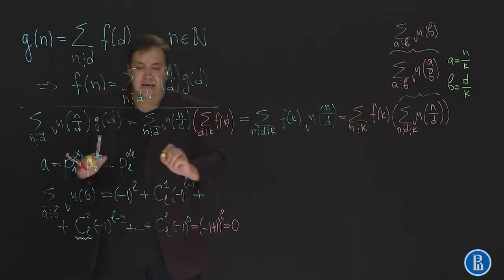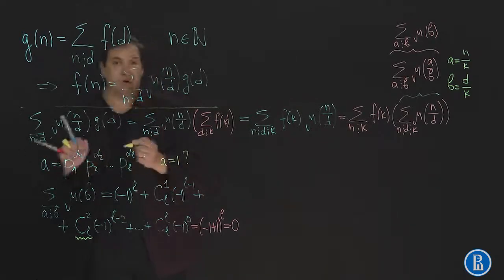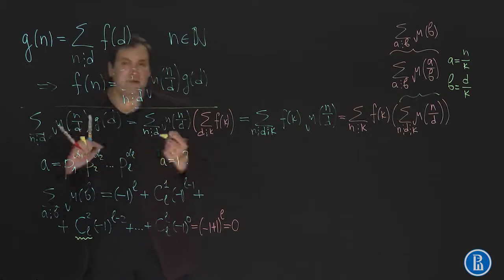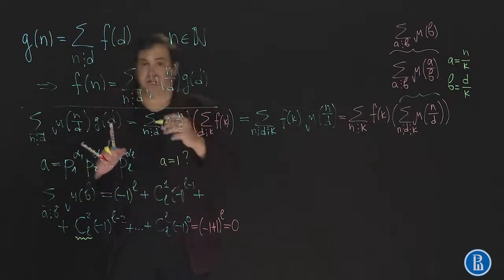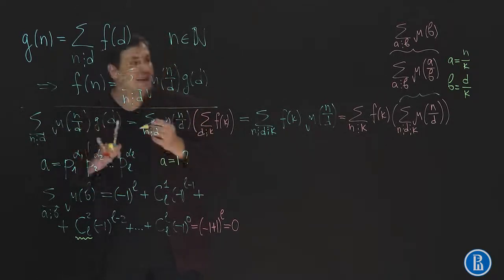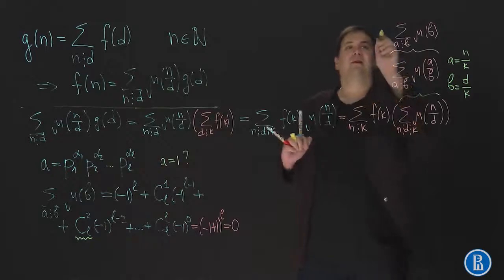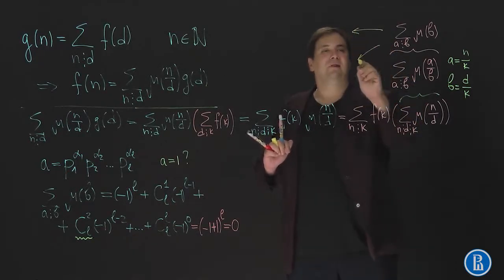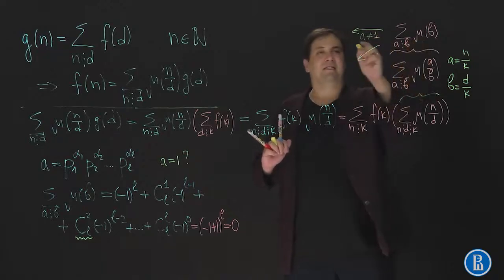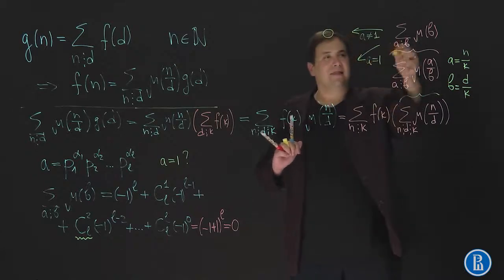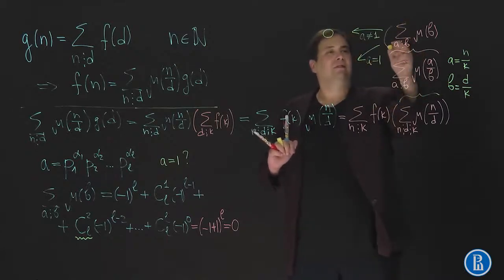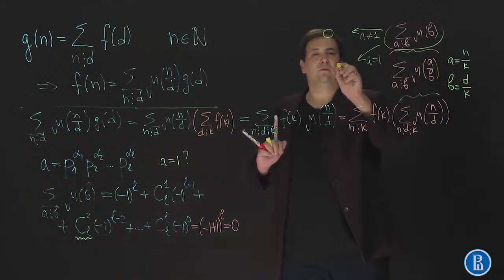But in case A is equal to 1, then there are no prime divisors here. And in this case the only divisor of number 1 is just number 1. And we know that Möbius function of 1 is equal to 1. This leads to the following conclusion. If A is not equal to 1, then this expression is equal to 0. And if A is equal to 1, then this expression is equal to 1.